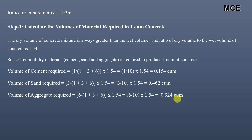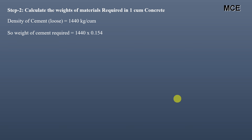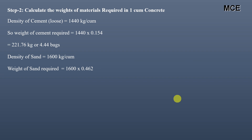After finding the volume, we find the weight by multiplying density by volume. Density of cement is 1440 kg per cubic meter, so weight of cement = 1440 × 0.154 = 221.76 kg. Dividing by 50 gives 4.44 bags. Density of sand is 1600 kg per cubic meter, so weight of sand = 1600 × 0.462 = 739.2 kg of sand required to make one cubic meter of wet concrete.